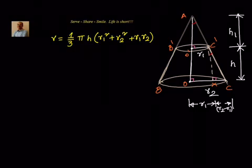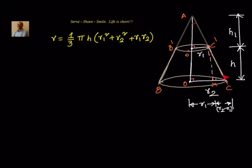First of all, let's understand what the frustum means. A frustum is a part of a cone when a cone is divided by a horizontal plane. Suppose we have cone ABC, divided by a horizontal plane into two parts. We see that there is a small cone AB'C', and then we have the frustum of the cone. So, volume of ABC equals volume of small cone plus volume of frustum of cone.